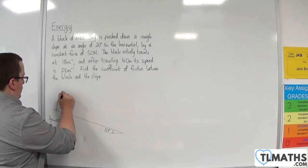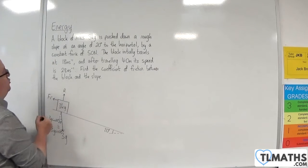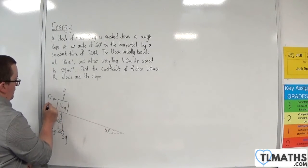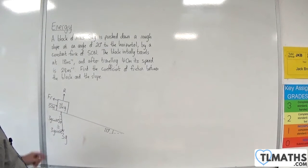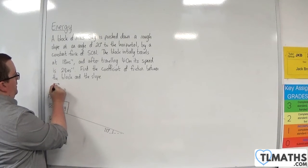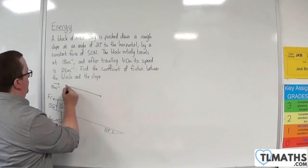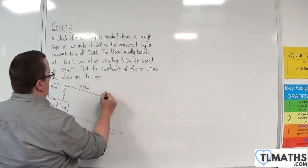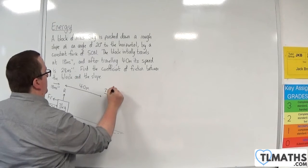There will be a normal reaction force. There will be a frictional force acting against the direction of motion. It is being pushed down the slope by a constant force of 50 newtons. It is initially travelling at 18 metres per second. And it travels down the slope for 40 metres before the speed is then at 28 metres per second.